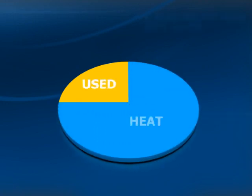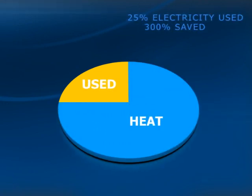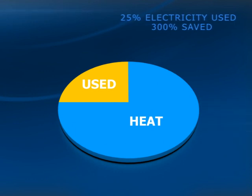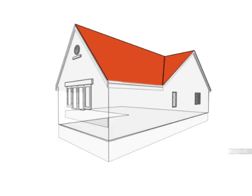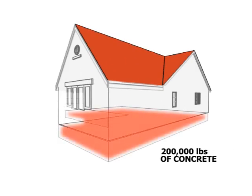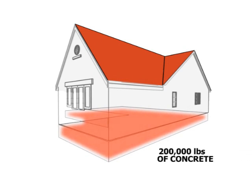Electricity is only needed for running the compressor and for circulating water in the floor and the ground. Controlling the heat pump isn't easy though. There is a huge amount of concrete with great heat capacity. Turning the heat pump on would not give instant heat.